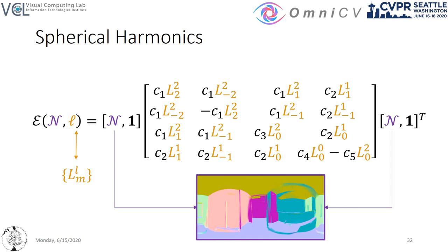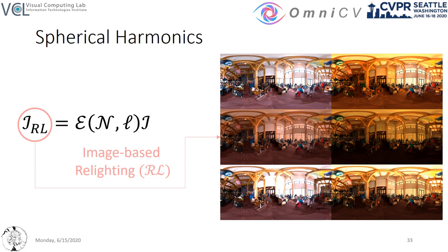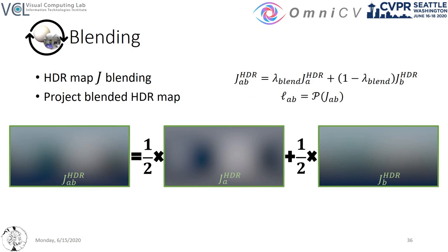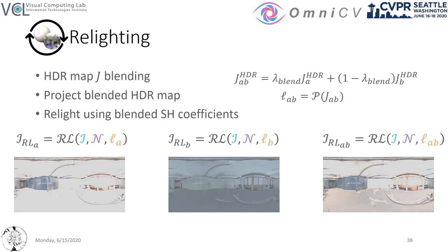The resulting differentiable relighting operation can relight spherical panoramas when normal maps are also available, allowing us to synthesize new samples with various lightings. To increase the variance of our data synthesis pipeline, we linearly blend randomly sampled HDR lighting maps, and then re-project the blended HDR map to a new set of coefficients, using these to relight input images. By mixing lighting parameters, we greatly increase the variance of our input lightings, and our data synthesis block generates relit samples with highly varying lighting.